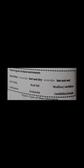Three types of mass movements: very slow (soil creep, solifluction), fast and dry (rock fall), and fast and wet (mud flow, earth flow, landslide, slumps). Types of mass movements include: rotational landslide, translational landslide, block slide, rock fall, topple, debris flow, debris avalanche, mud flow, slide, and creep.